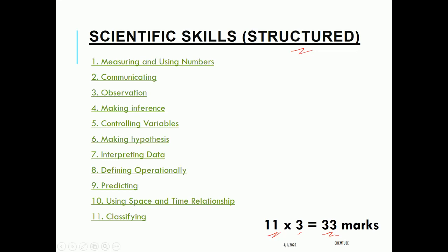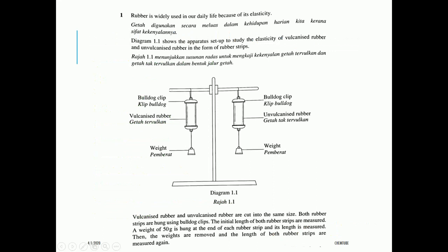First we look at measuring using numbers. Rubber is widely used in our daily life because of its elasticity. Diagram 1.1 shows the apparatus set up to study the elasticity of vulcanized rubber and unvulcanized rubber in the form of rubber strips. Both rubber strips are cut into the same size and hung using bulldog clips, and the initial length of both rubber strips is measured.